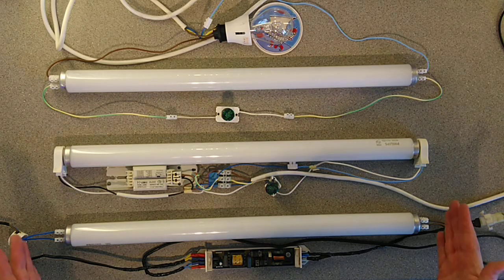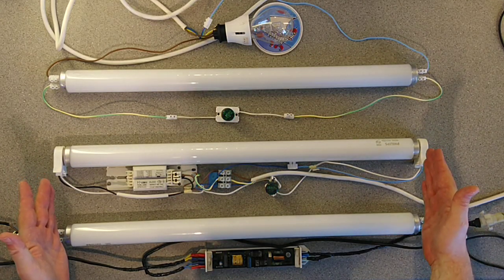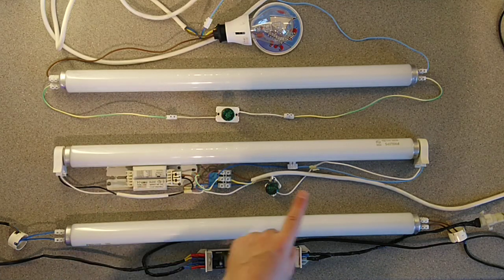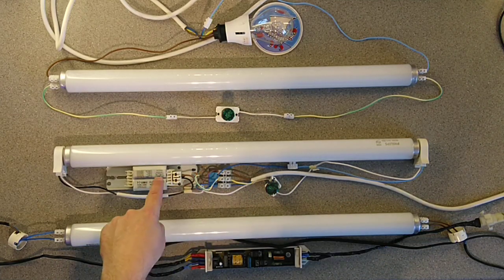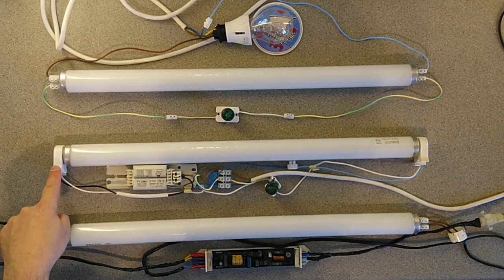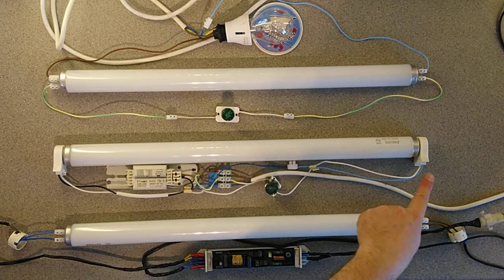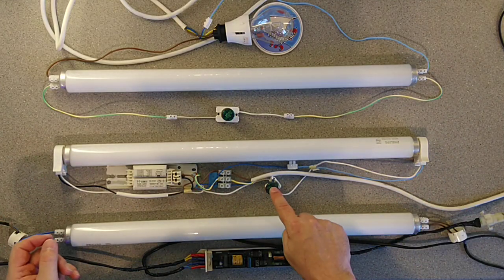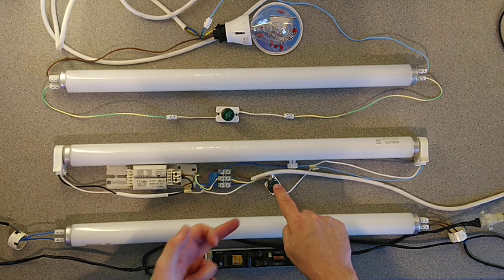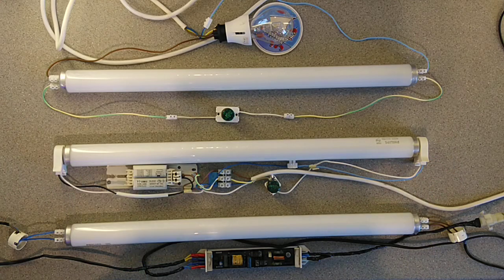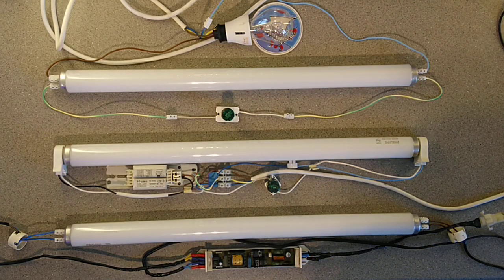Number two is a magnetic ballasted lamp. The live comes in, goes through the magnetic ballast and goes to one end of the tube. The neutral comes to the other end of the tube, and the starter, which is an electronic starter, is going to control the lamp. The reason I've used electronic starters is so that the lamps all have a chance to come on together.